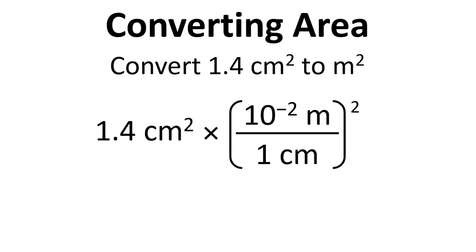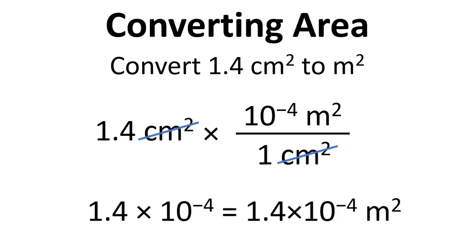So we need to square that conversion factor. We end up with 10 to the minus 4 m² per 1 cm². We cancel out the cm² and we end up with 1.4 times 10 to the minus 4 m².